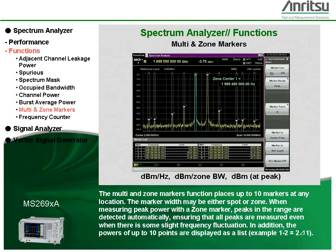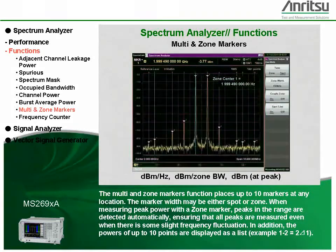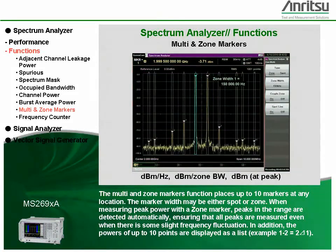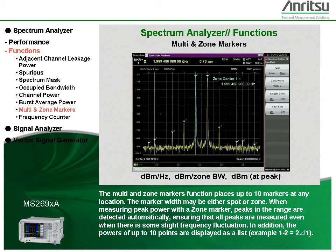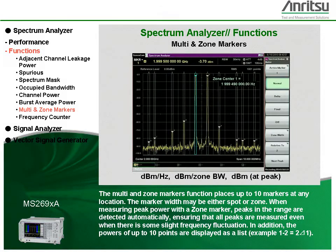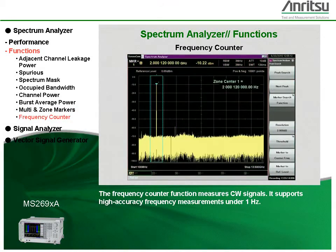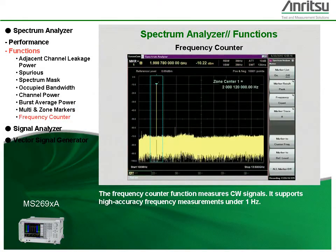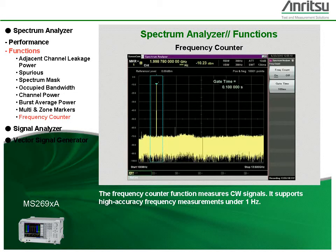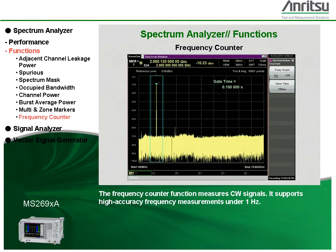The powers of up to 10 points are displayed as a list. The frequency counter function measures CW signals and supports high-accuracy frequency measurements under 1 Hz.